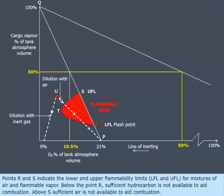Points R and S indicate the lower and upper flammability limits, LFL and UFL, for mixtures of air and flammable vapor. Below the point R, sufficient hydrocarbon is not available to aid combustion. Above S, sufficient air is not available to aid combustion.